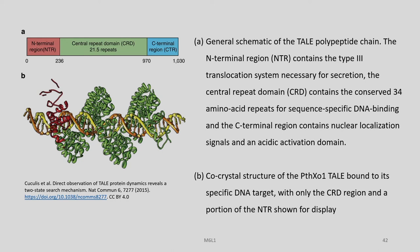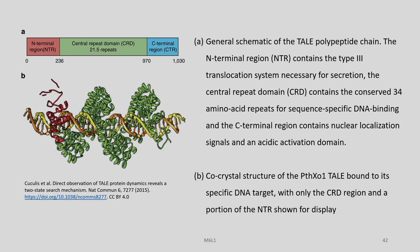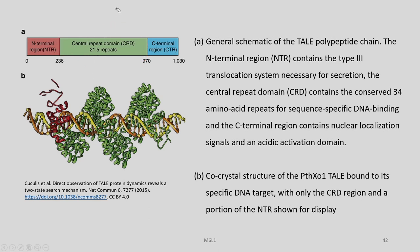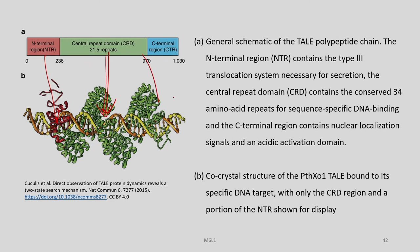We have seen in detail the typical structure of a TAL protein. Here is a TAL protein with an N-terminal region (NTR) and then a central repeat domain (CRD) — in this case around 21.5 to 22 repeats — and there is a C-terminal region. This is a protein with N-terminal, C-terminal, and a central domain. The CRD contains the 34 amino acid repeats for sequence-specific DNA binding, and the C-terminal contains the nuclear localization signal and the acidic activation domain.